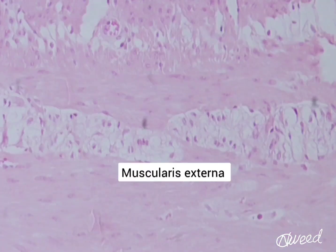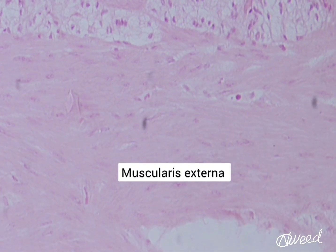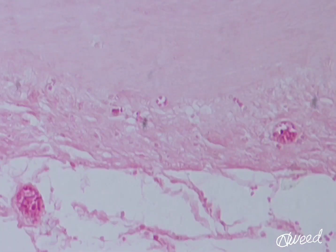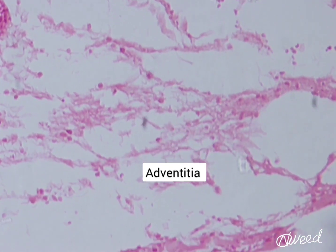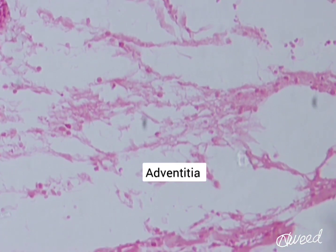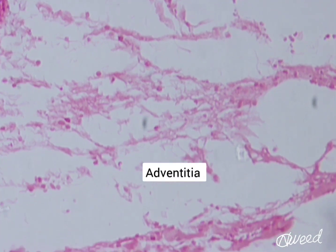The outer longitudinal layer is thickened at three places to form taeniae coli. The transverse and sigmoid colon are completely surrounded by serosa. The anterior surface of the ascending and descending colon is covered by serosa, and their posterior surface is covered by adventitia.